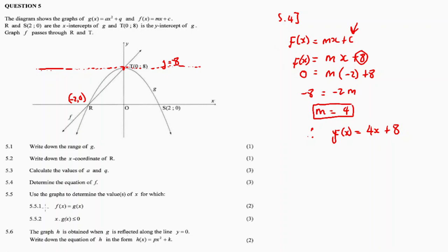5.5: Use the graphs to determine the values of x for which f of x is equal to g of x. This means the points of intersection. For which x values are f of x equal to g of x? 5.5.1: x is equal to minus 2, where f equals g, and x equal to 0, where both graphs are equal. Therefore, it's x equal to minus 2 and x equal to 0.